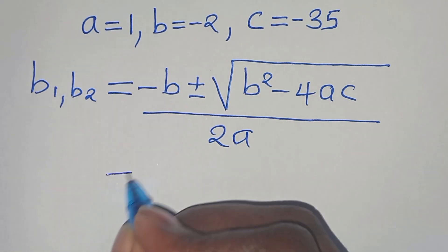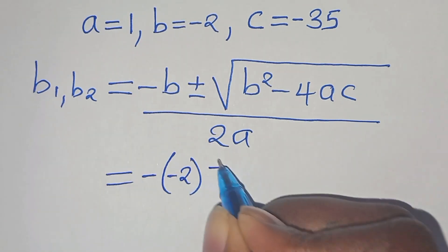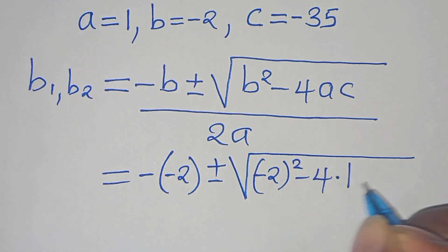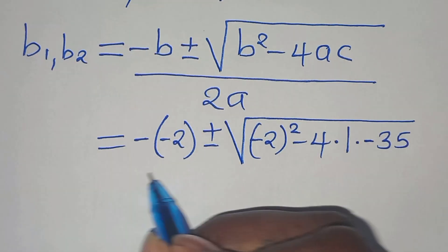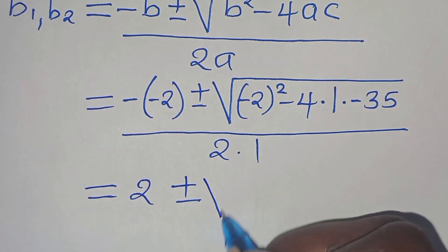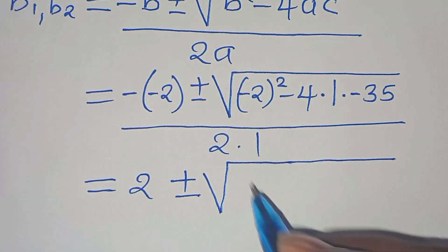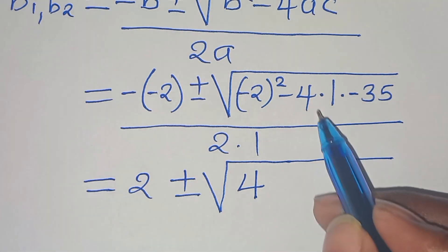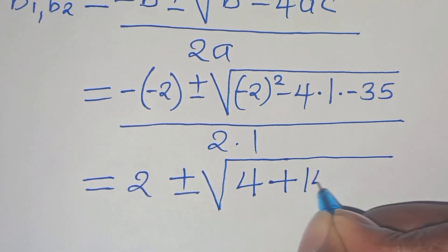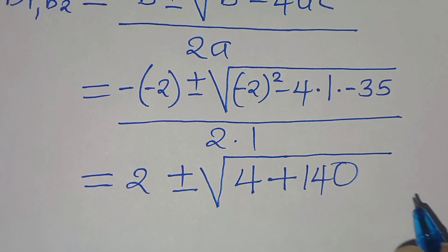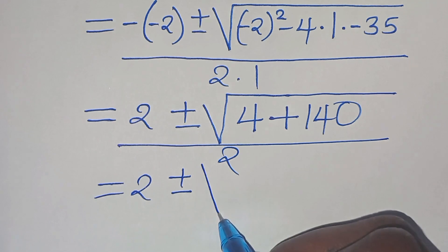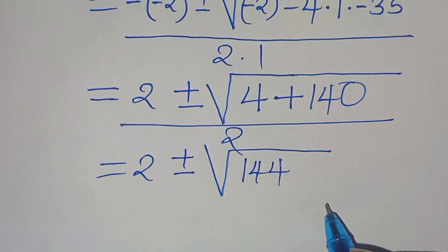Substituting the values of a, b, and c: we have minus minus 2, plus or minus the square root of minus 2 raised to the power of 2, subtract 4 times a which is 1, times c which is minus 35, all divided by 2 times 1. So minus times minus 2 is 2, plus or minus the square root of: minus 2 squared is 4, minus 4 times minus 35 is plus 140, divided by 2.